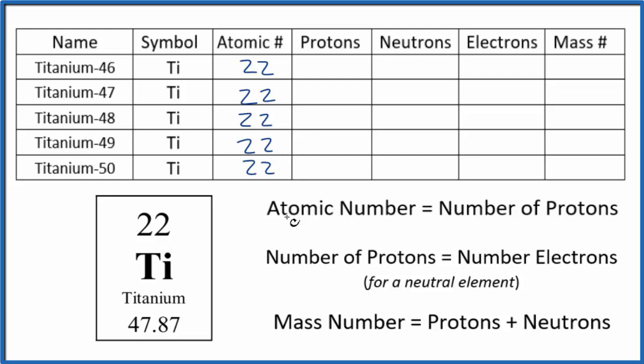For the atomic number, that equals the number of protons. So we can write 22 in here again. So the isotopes of titanium, all these isotopes, they have the same atomic number, the same number of protons.